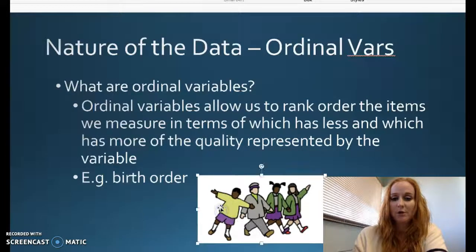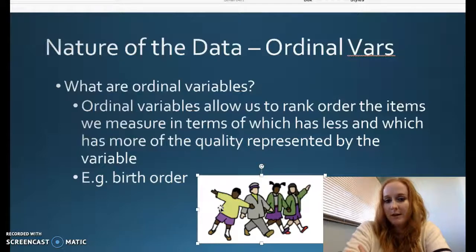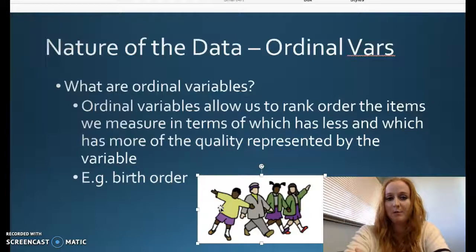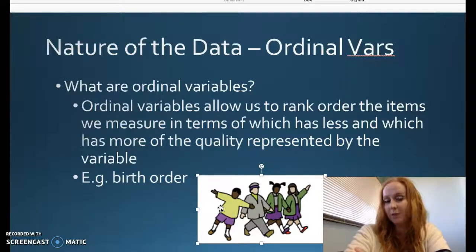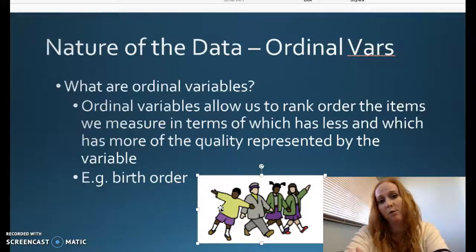Now we're going to go into ordinal variables. Ordinal variables are a lot like nominal, like some kind of category, but they allow us to rank order the items we measure in terms of which has less or which has more of the quality represented by the variable. You remember from your stats test, we talked about birth order. Oldest, youngest, middle child. So you would know qualitatively who is older or younger, but you wouldn't know by how much. You could put them in an order with who was born first and who was born last, but you wouldn't know how old they were.